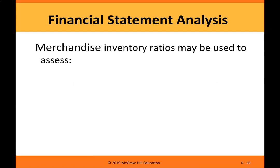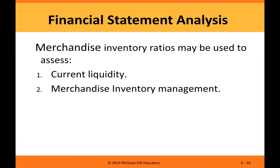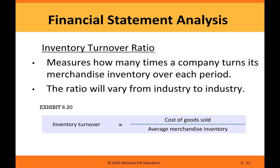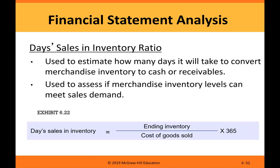Financial statement analysis. Merchandise inventory ratios may be used to assess current liquidity and merchandise inventory management. Inventory turnover ratio measures how many times a company turns its merchandise inventory over each period; the ratio varies by industry. Inventory turnover equals cost of goods sold divided by average merchandise inventory. Days sales in inventory estimates how many days it will take to convert merchandise inventory to cash or receivables, and assesses whether inventory levels can meet sales demand. Days sales in inventory equals ending inventory divided by cost of goods sold, times 365.